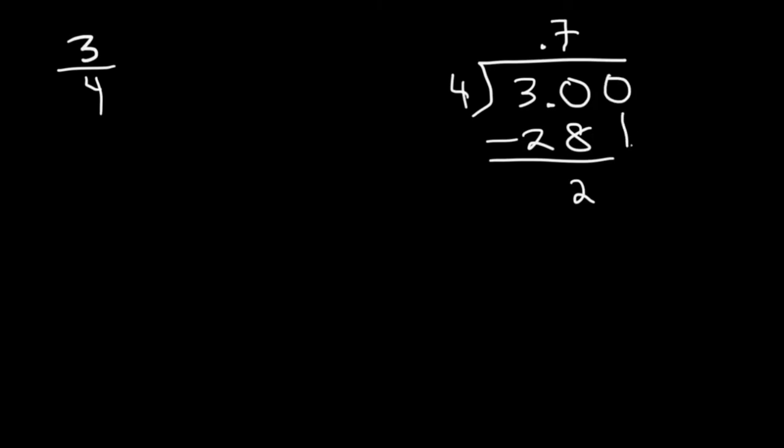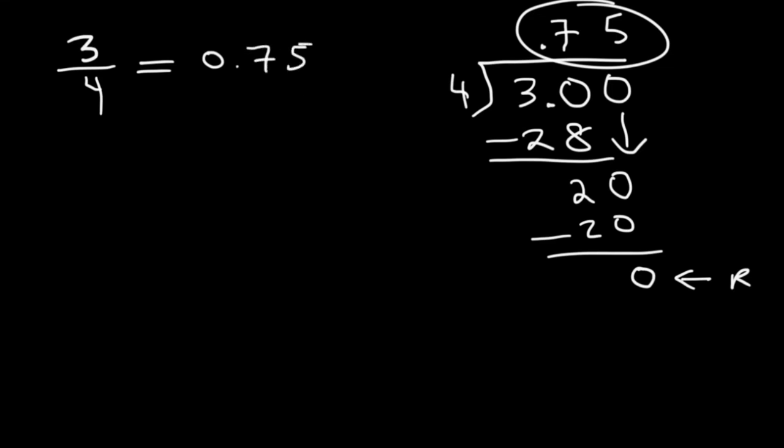So 30 minus 28 is 2. Next, add a 0 and bring it down. Now how many times does 4 go into 20? 4 goes into 20 5 times. 4 times 5 is 20, and there's no remainder. Whenever you get a remainder of 0, that's it. You can stop. This is the exact answer. So 3 over 4 is basically 0.75. And that's a simple technique you can use to convert a fraction into a decimal.